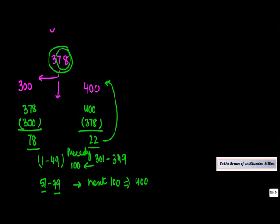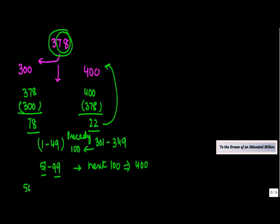But what about 50? Now, 50 lies equally from 300 and 400. So, let's say if the number was 350, the distance of 350 from 300 is how much? 50. The distance of 350 from 400 is again 50.